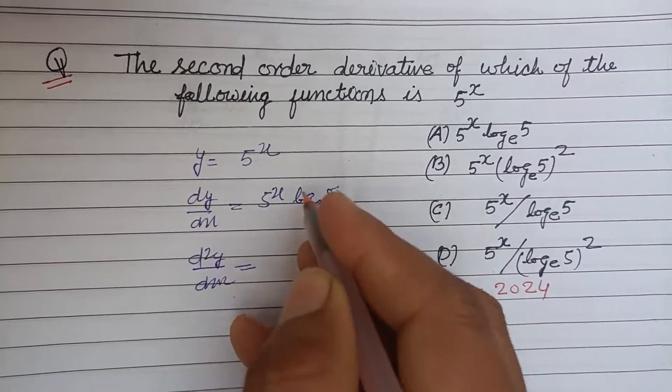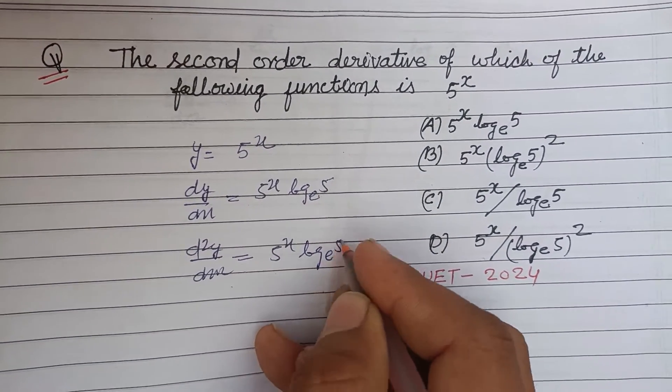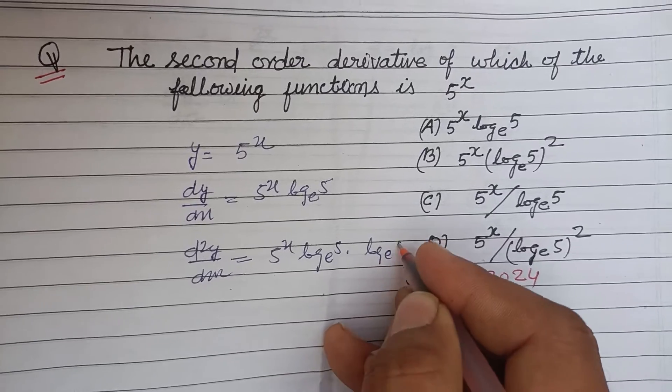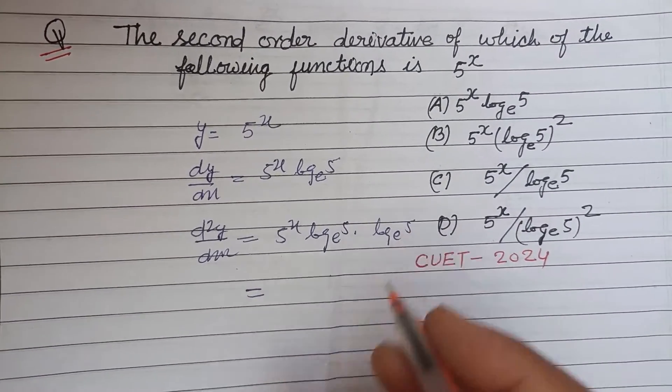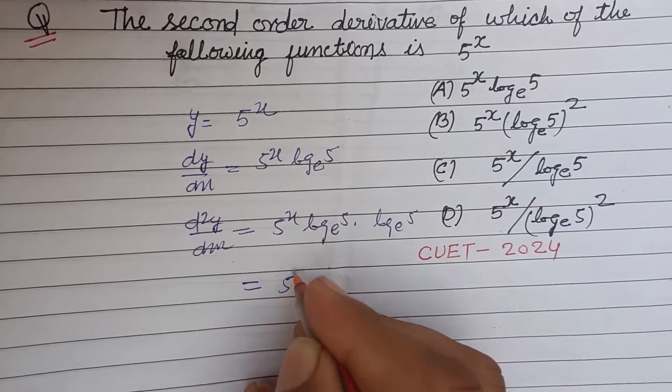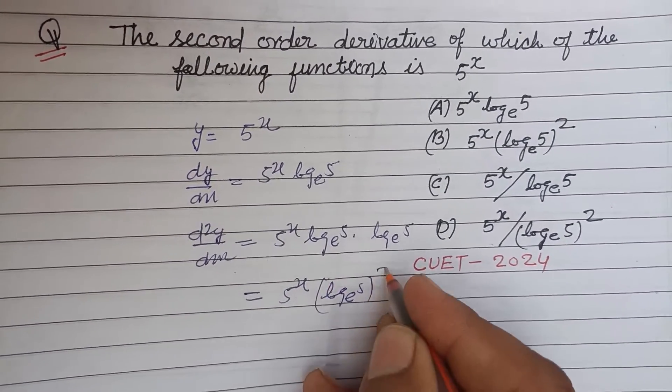d²y/dx² = 5^x log_e(5) × log_e(5), since log_e(5) is constant. So this equals 5^x (log_e(5))².